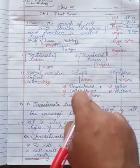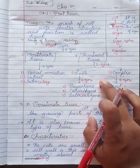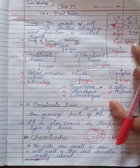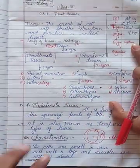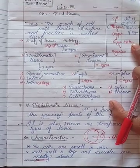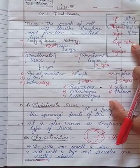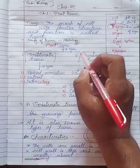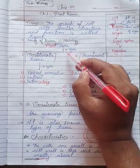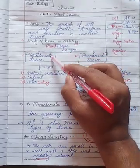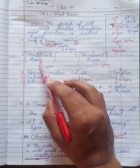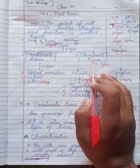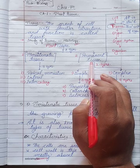Here is a simple and short chart related to plant tissue. We should remember this chart because it will be helpful in the next classes. Plant tissue can be divided into two types: the first one is meristematic tissue and the second one is permanent tissue.